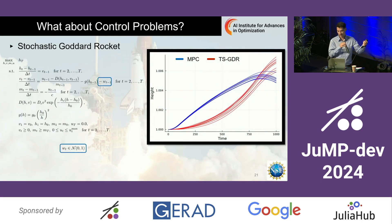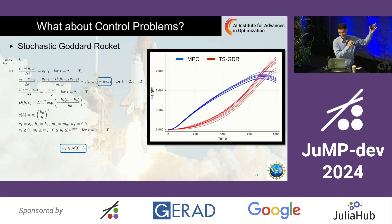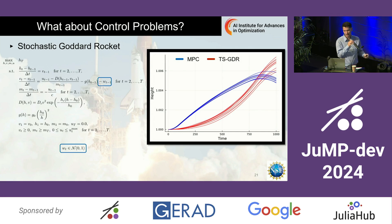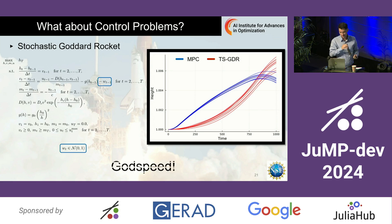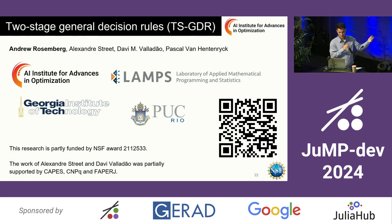For control problems, I made a stochastic version of the Goddard rocket problem from the JuMP tutorials for nonlinear problems — taking some poetic license so it fits the multi-stage stochastic programming framework. We added uncertainty to that problem, and when you compare it to MPC — model predictive control — we beat it. That was very nice, and it's thanks to JuMP and the whole ecosystem that we could put things together.